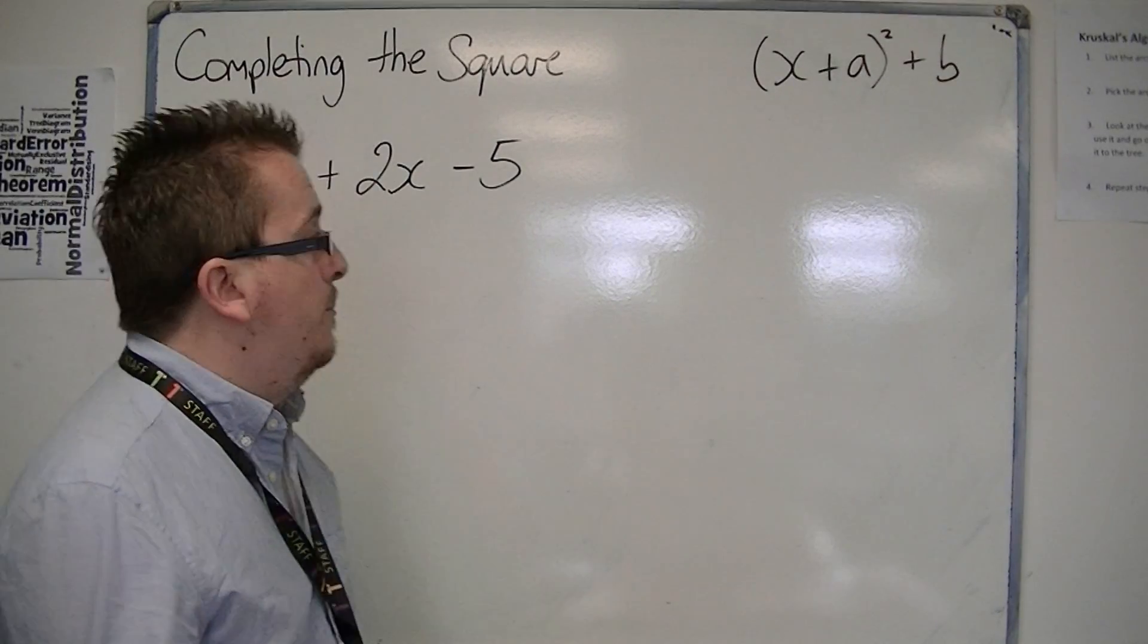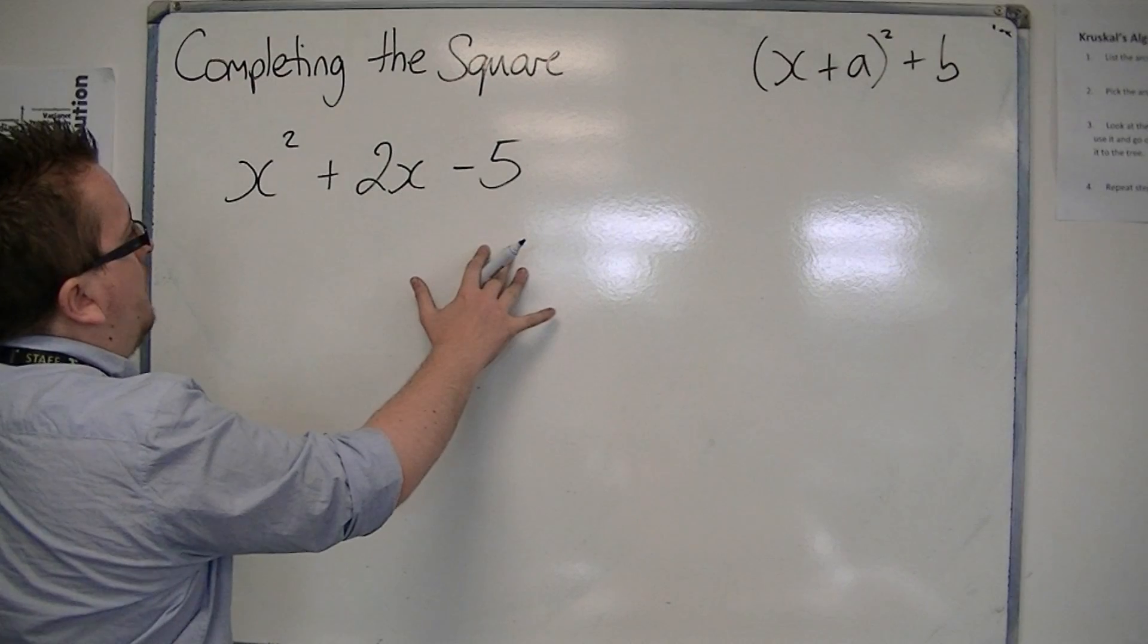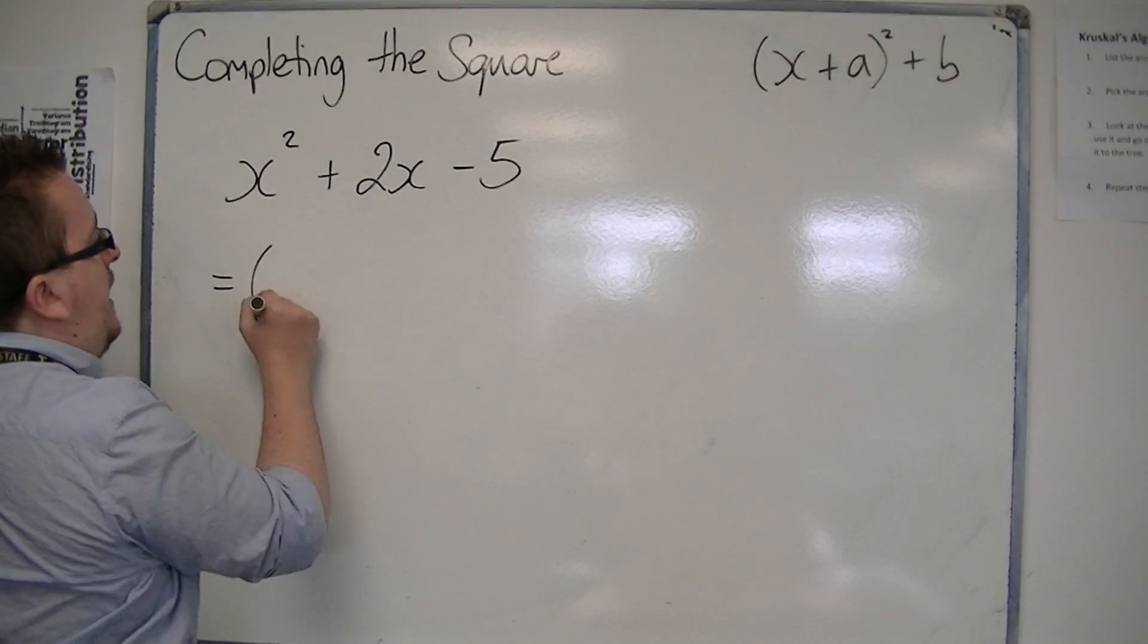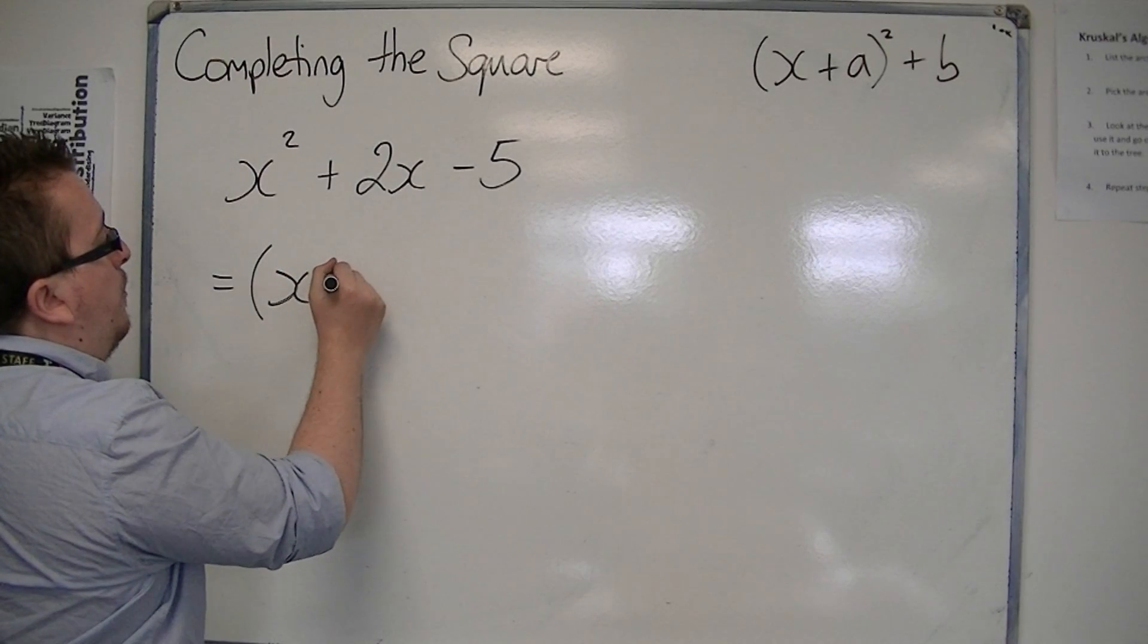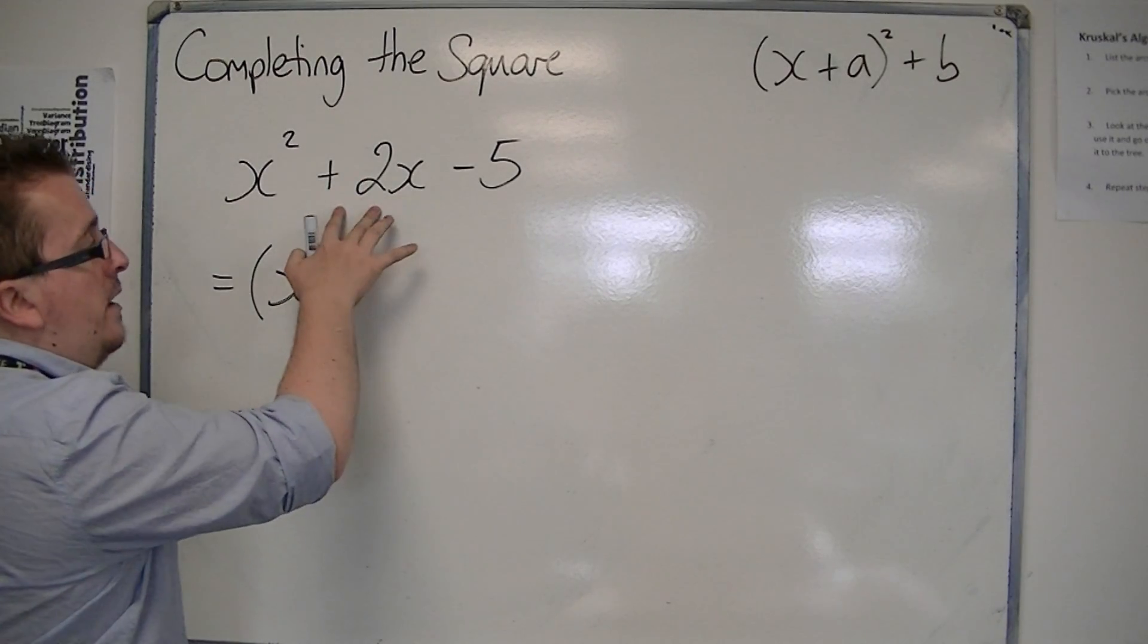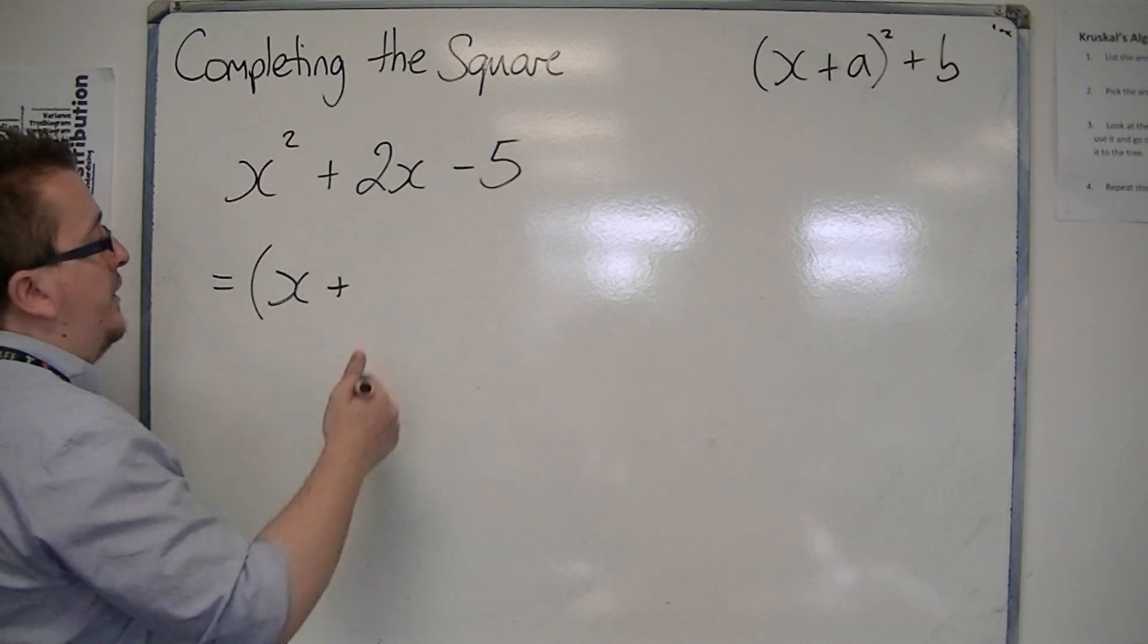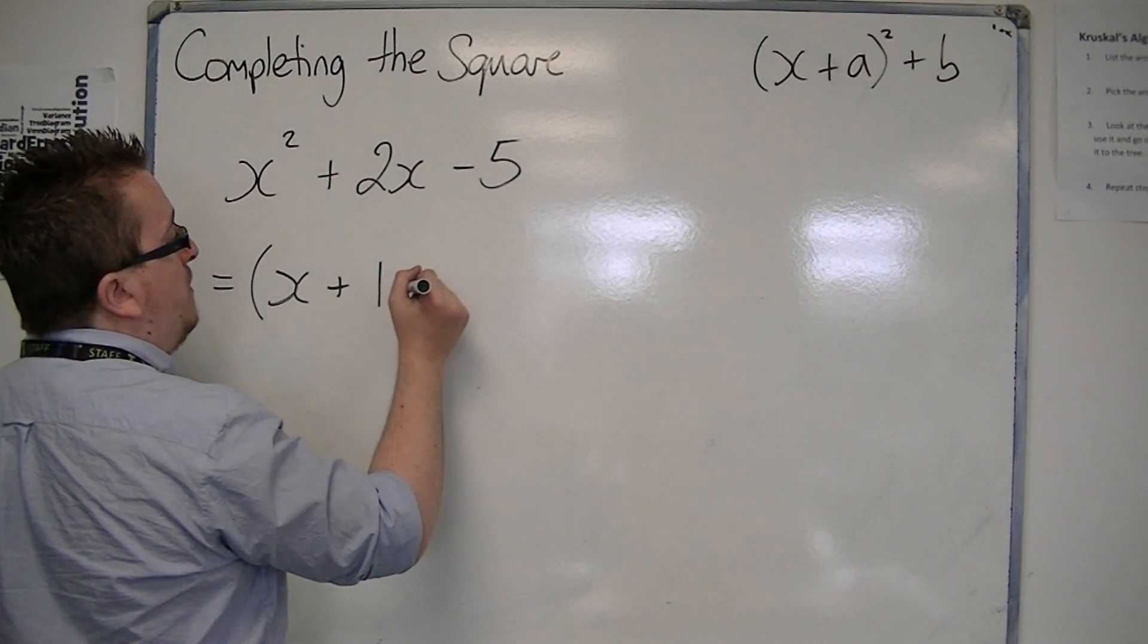So in order to complete the square for this expression, what you do is write x plus, and you halve the number 2, the number in front of the x, the coefficient of x. So you halve it, which would just be 1.